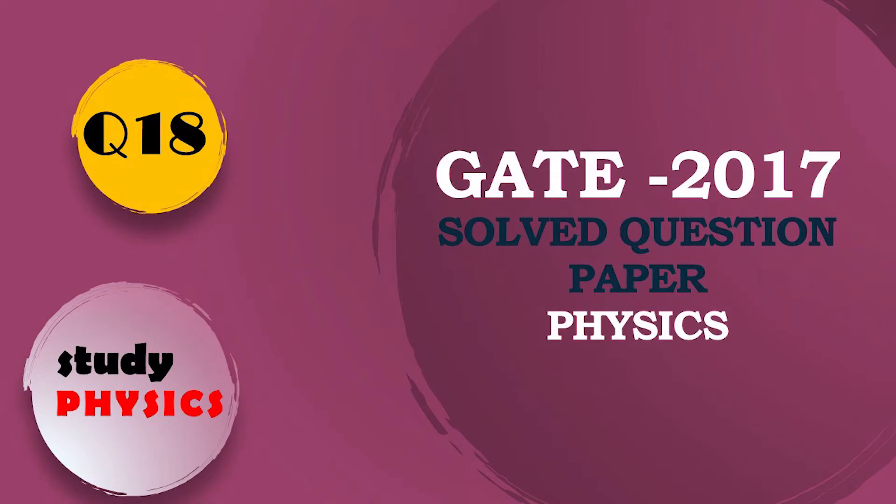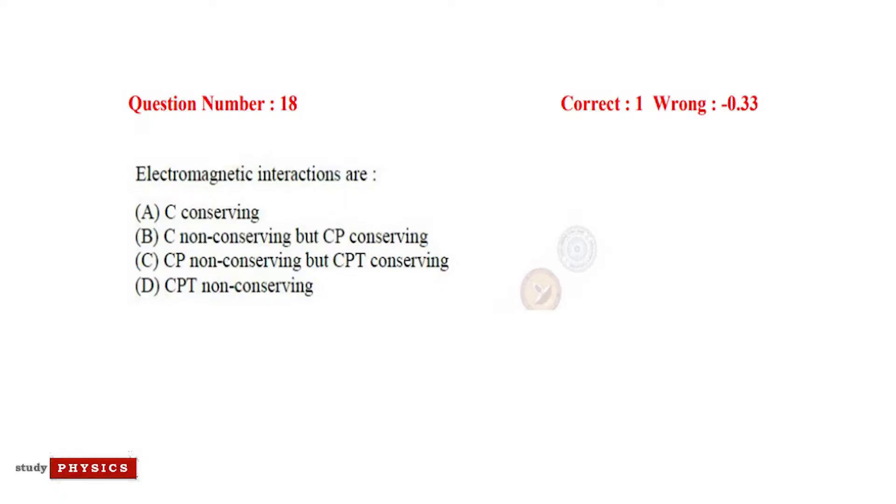Hi everyone, welcome to Study Physics. Here's question number 18. The question is: electromagnetic interactions are. The options are: A is C conserving, B is C non-conserving but CP conserving, C is CP non-conserving but CPT conserving, and